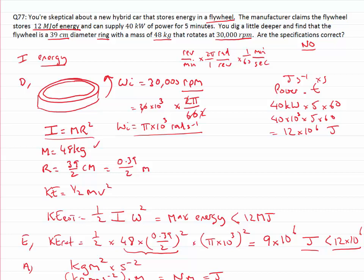So if it was supplying the 40 kilowatts, it would only be able to run for a shorter period of time, which you can get by basically, if you've got that time, it's going to be equal to the amount of energy divided by the power, so you could work out how long the flywheel could run for.